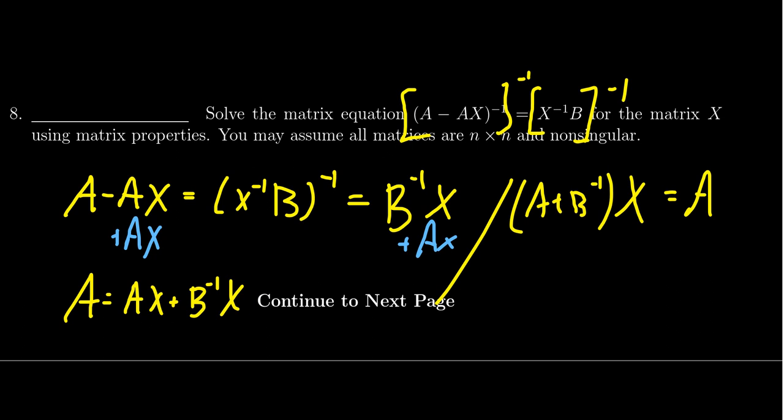And then, basically, to solve for X here, we're going to multiply both sides on the left by (A + B^(-1))^(-1). So this would then give us that X equals, make sure you stay on the left here, (A + B^(-1))^(-1) times A.